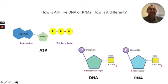How is ATP like DNA or RNA? Remember that ATP is a nucleic acid, just like DNA or RNA. How are they similar? Well, they both have phosphates. They both have sugar. ATP uses the ribose sugar, just like RNA. And they both have a nitrogen base. Adenine for ATP.